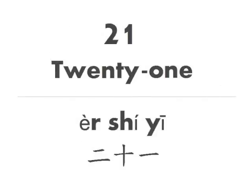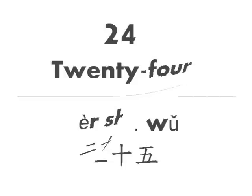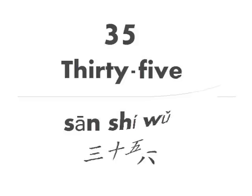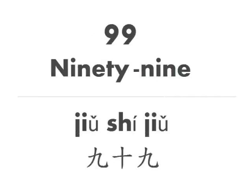Now, to say twenty-one, we would just say two, ten, one. Twenty-four is two, ten, four. Thirty-five is three, ten, five. What is forty-six? Just say four, ten, six: si shi liu. And the same pattern continues all the way through ninety-nine: jiu shi jiu.